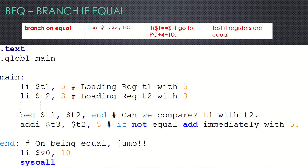The first instruction we'll learn is BEQ, which is nothing but 'branch if equal.' The syntax is: BEQ, first register, second register, and the label. You check if the values in these two registers are equal, and if they are equal, you branch to that address.